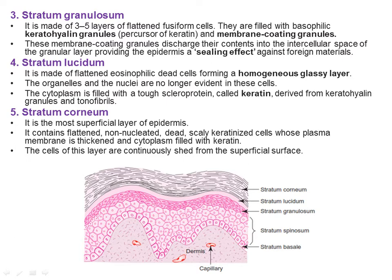The stratum lucidum is made up of flattened eosinophilic dead cells forming a homogeneous, transparent glossy layer. Organelles and nuclei are no longer evident; cytoplasm is filled with the tough scleroprotein keratin, derived from keratohyalin granules and tonofibrils. The last layer, stratum corneum, is the most superficial. It contains flattened, non-nucleated dead scaly keratinized cells with thickened plasma membranes and cytoplasm filled with keratin. These cells are continuously shed from the superficial surface.